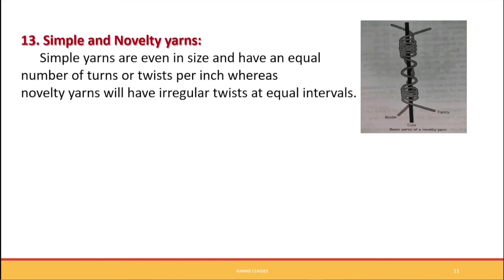Simple yarns are even in size and have an equal number of turns or twists per inch. Novelty yarns, also called specialty or complex yarns, are fancy yarns used to add beauty to the product. A novelty yarn has three basic parts: a ground or core yarn that holds the structure in position, a fancy or effect yarn that adds beauty, and a binder yarn that keeps the fancy yarn in place.